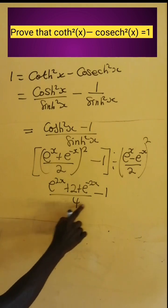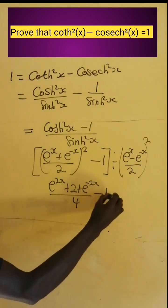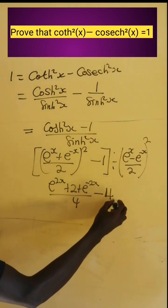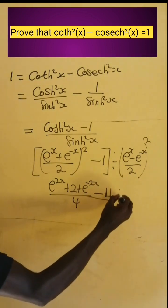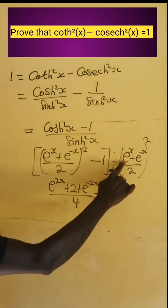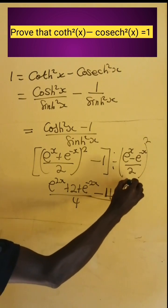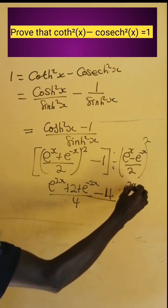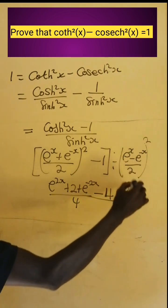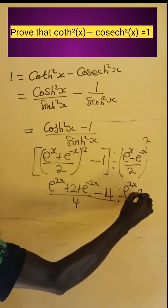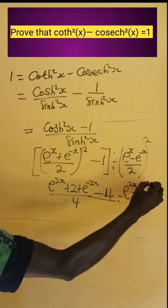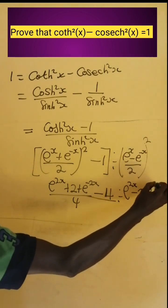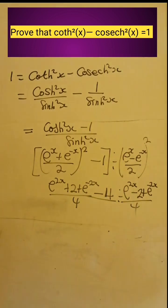Let's simplify this. We multiply negative 1 by 4 to get negative 4, and divide all by 4. Now let's expand the denominator: e to the power x squared gives e to the power 2x. We multiply 2 by e to the power x times e to the power negative x to get 2, and this gives positive e to the power negative 2x. All divided by 2 squared, which is 4.